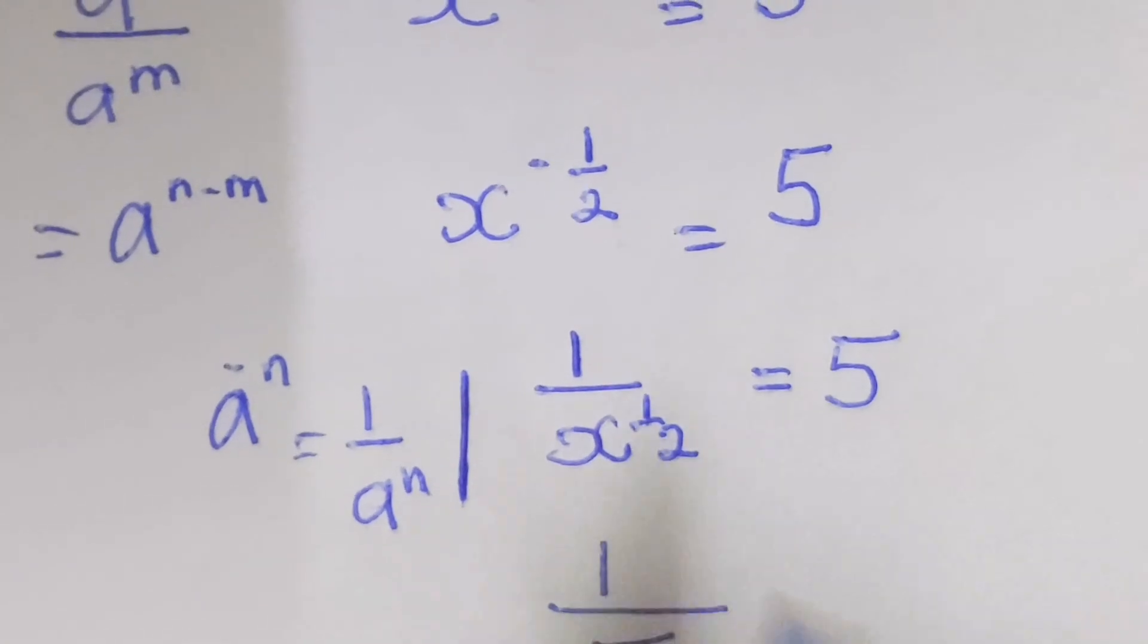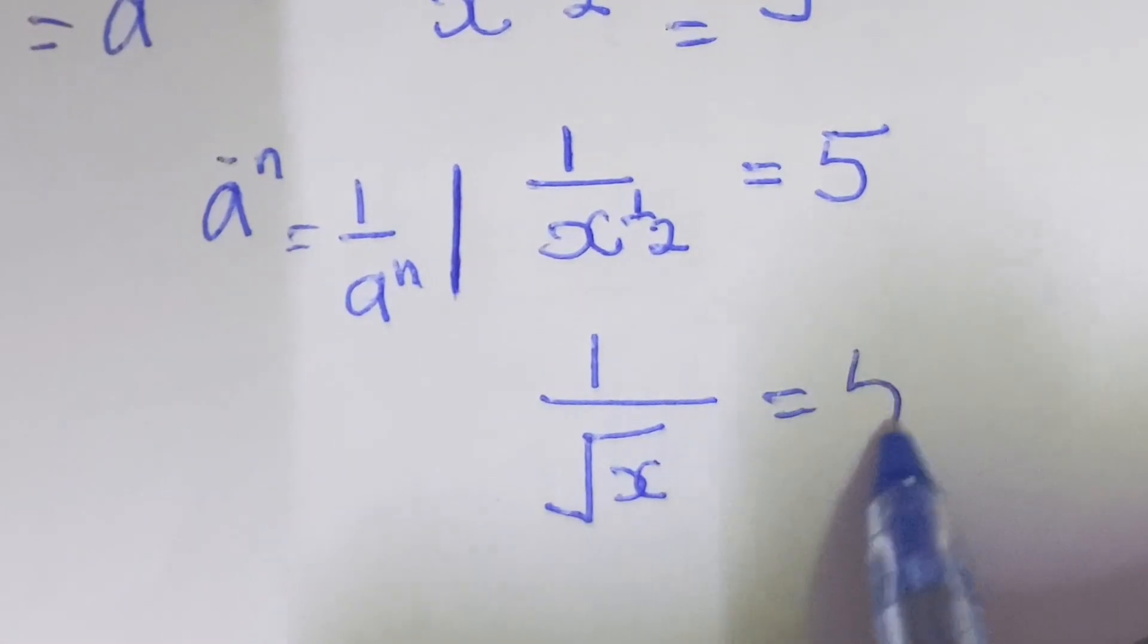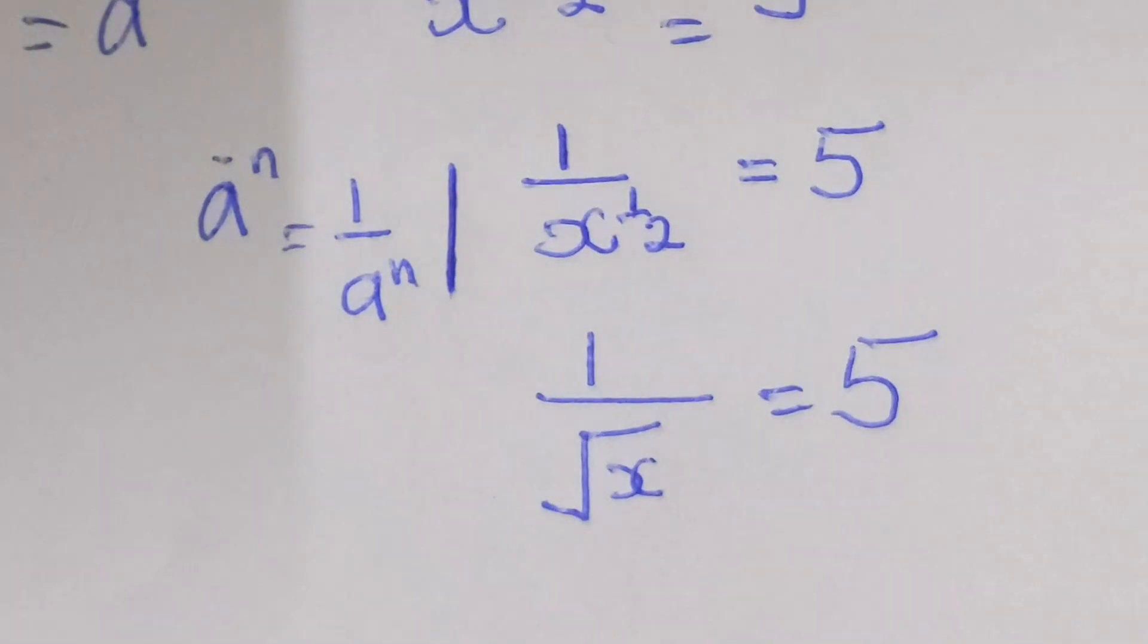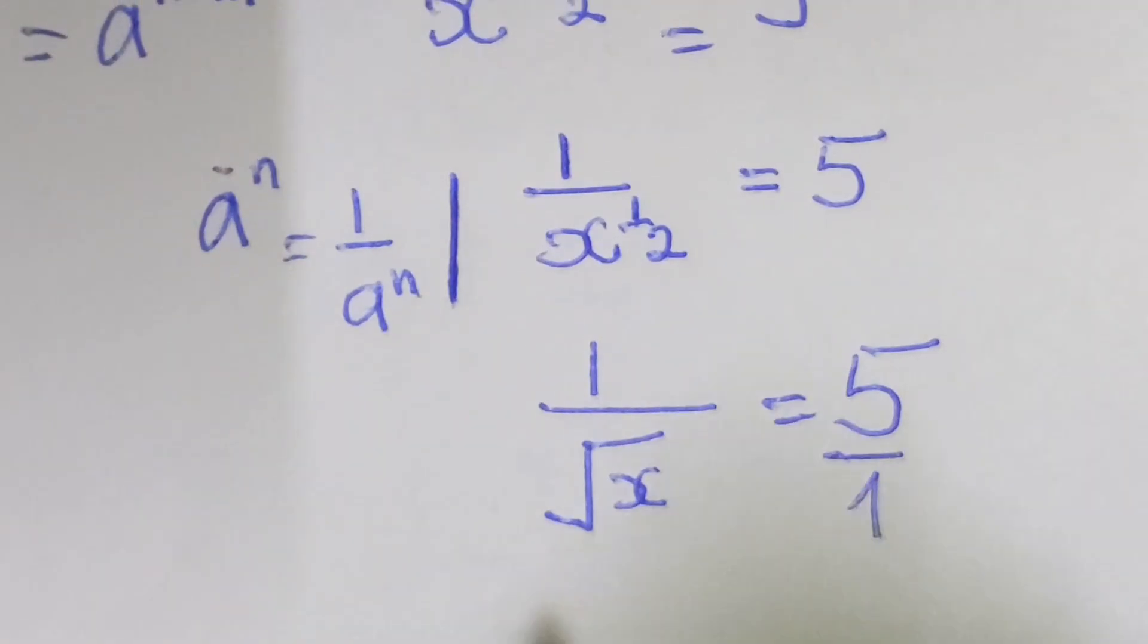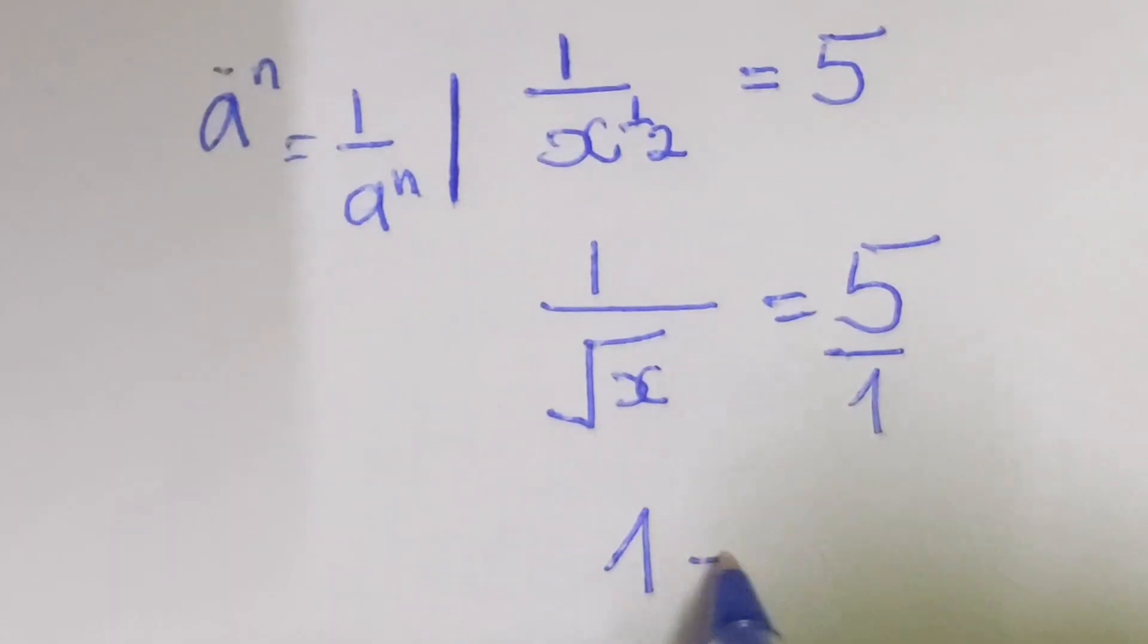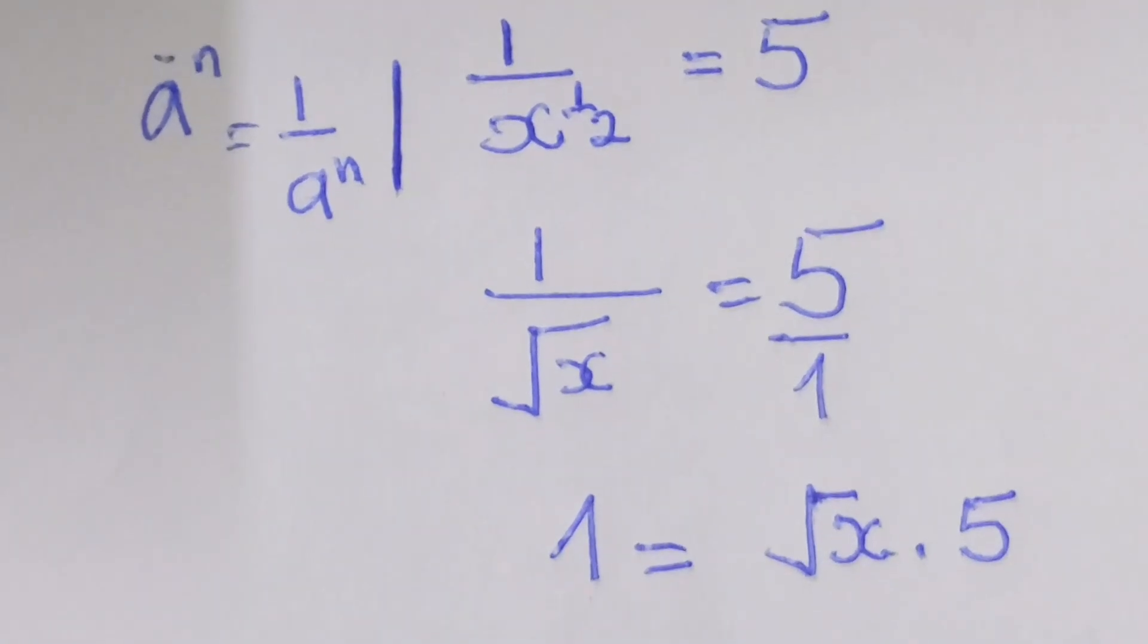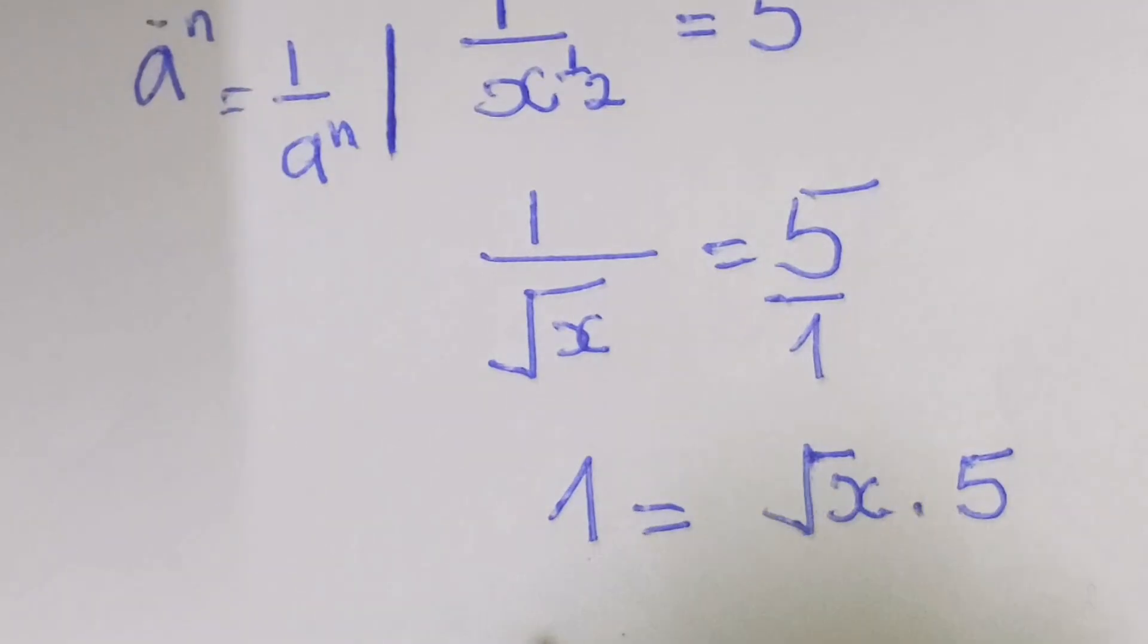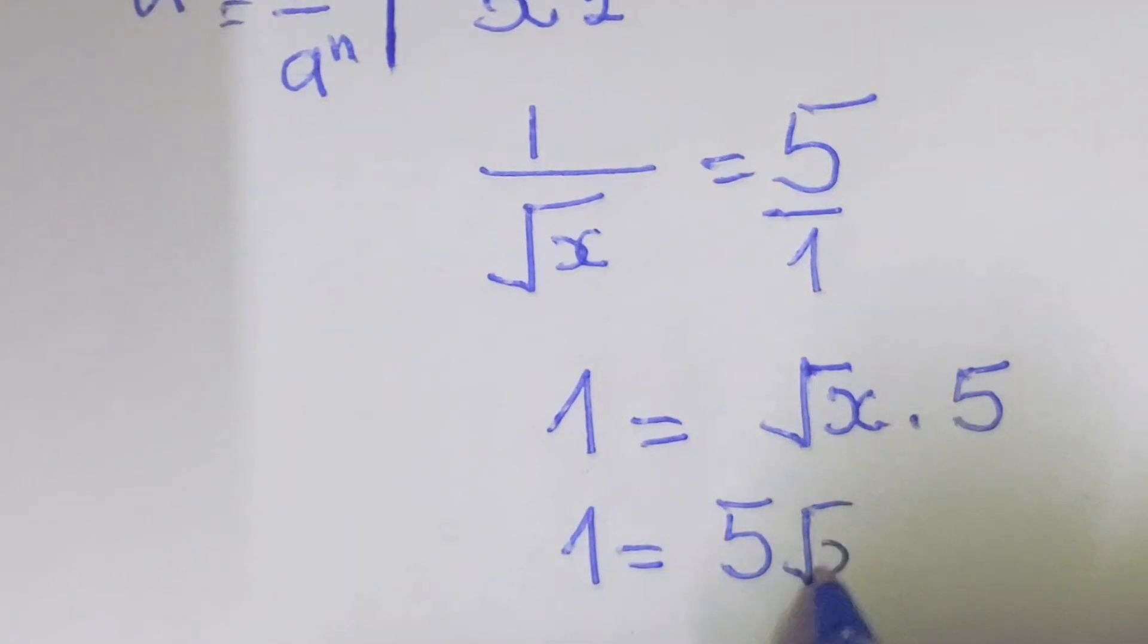Then here we can simply say 1 over, 1 over 2 times 5. Or we can simply write 1 equal to 5 square root of x.